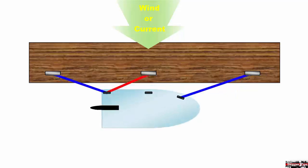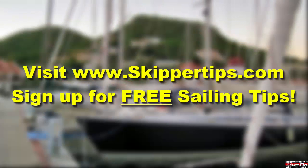Move the breast line from your beam cleat to a cleat forward or aft. This will allow your boat to rise and fall with the tide without damage to deck fittings.